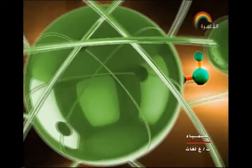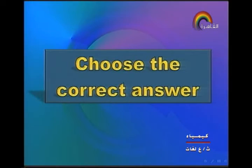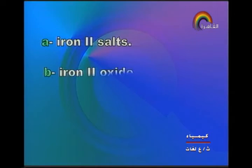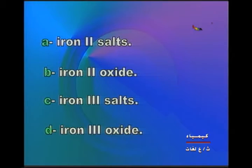Let us start. Choose the correct answer: iron dissolves in diluted acid to produce what — iron(II) salts, iron(II) oxide, iron(III) salts, or iron(III) oxide? If you think about it, the answer will be iron(II) salts.